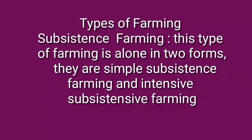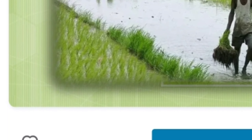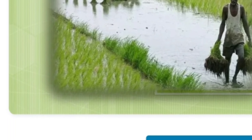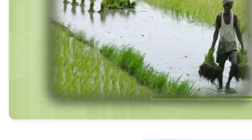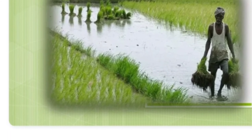You all know India is an agricultural country, and agriculture is dependent upon the monsoon, that is rainfall. Our agricultural activity depends on the rainfall. If the monsoon fails, everything fails. If farmers don't get irrigation facilities, our agricultural productivity is affected.